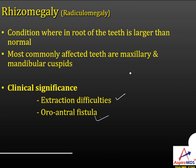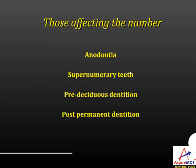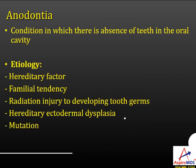Now let us see developmental disturbances that affect the number of teeth. These include anodontia, supernumerary teeth, pre-deciduous dentition, and post-permanent dentition. Anodontia is a condition in which there is absence of teeth in the oral cavity. It can be hereditary, familial, related to radiation injury to developing tooth germs, ectodermal dysplasia, or mutation.